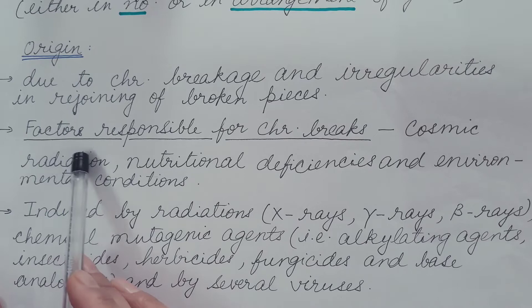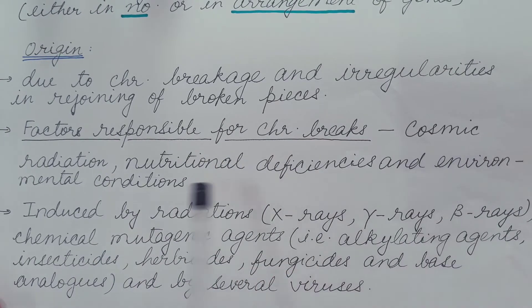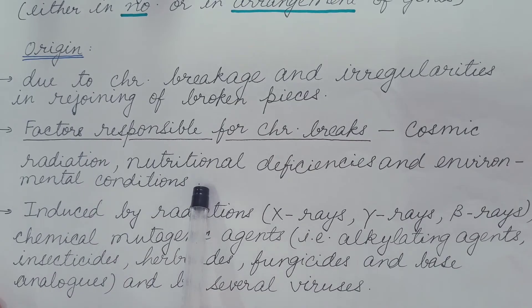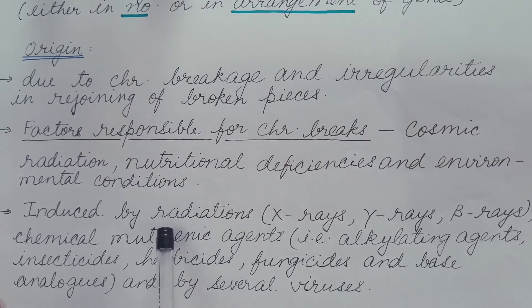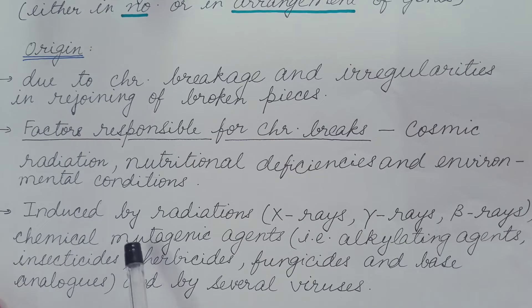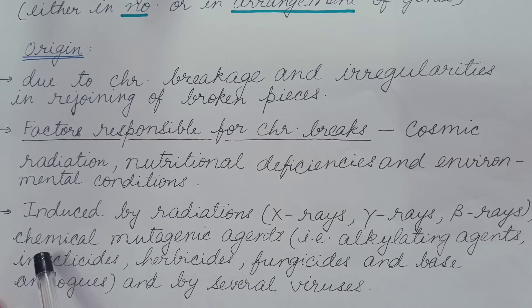Now let us see the factors responsible for chromosome breaks. These can be cosmic radiation, nutritional deficiencies, and environmental conditions. These occur in almost all animals, but their frequency of occurrence varies. The frequency of chromosome breaks depends upon several factors like age, availability of oxygen, temperature, and metabolic conditions.